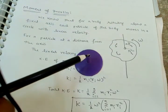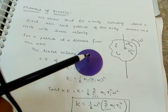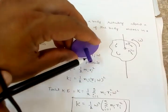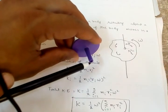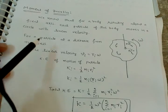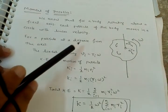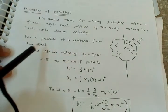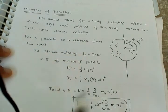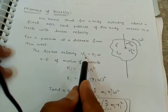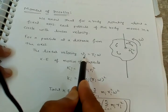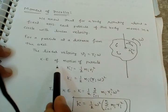This is the axis of rotation. For a particle at a distance r_i from the axis, the linear velocity of the ith particle is v_i equal to r_i times omega.